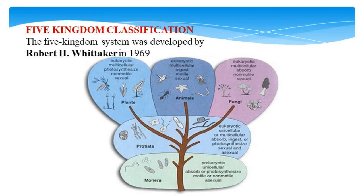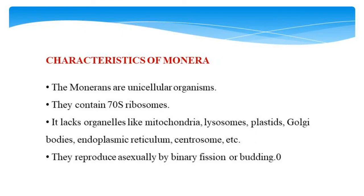In the year 1969, it was Robert H. Whittaker who proposed the five-kingdom classification. This includes Monera, Protista, Plants, Animals, and Fungi. As we are familiar with the characteristics of plants, animals, and Protista, let us now see the characteristics of Monera and Fungi.